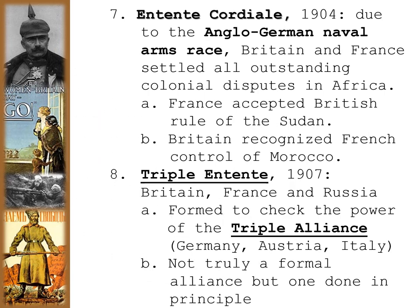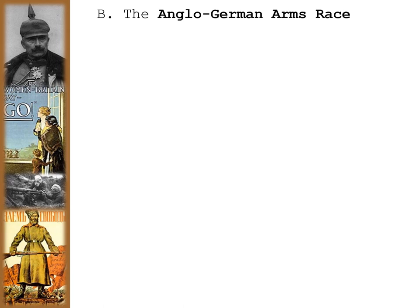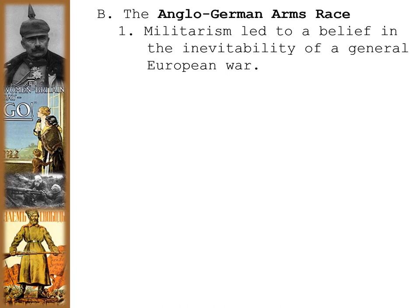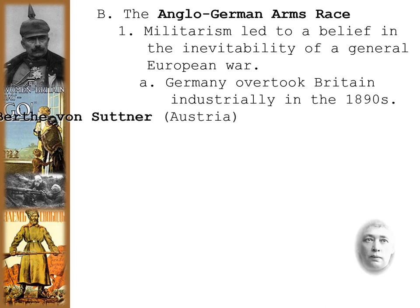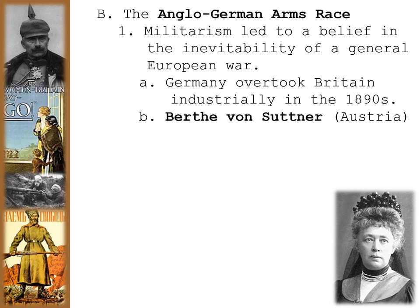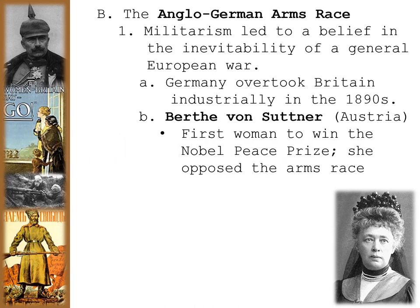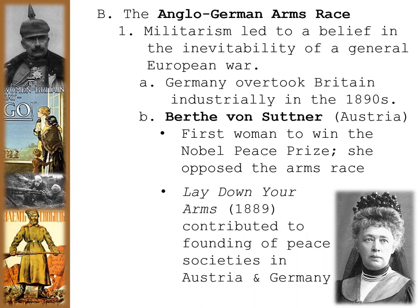The Triple Entente was not truly a formal alliance, but one done in principle, and it later became the basis of the Allied Powers in World War I. Another factor was the Anglo-German arms race — militarism led to a belief in the inevitability of a general European war. Germany had overtaken Britain industrially in the 1890s. Bertha von Suttner from Austria was the first woman to win the Nobel Peace Prize, opposing this arms race, writing Lay Down Your Arms in 1889, which contributed to founding peace societies in both Austria and Germany — but to no avail.